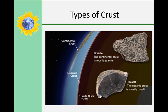As the name for oceanic crust already suggests, the crust is below the oceans. Compared to continental crust, oceanic crust is very thin — only 6 to 11 kilometers thick. It is more dense than continental crust, and therefore when the two types of crust meet, oceanic crust will sink underneath the continental crust. The rocks of the oceanic crust are very young compared with most of the rocks of the continental crust — they are not older than about 200 million years old.